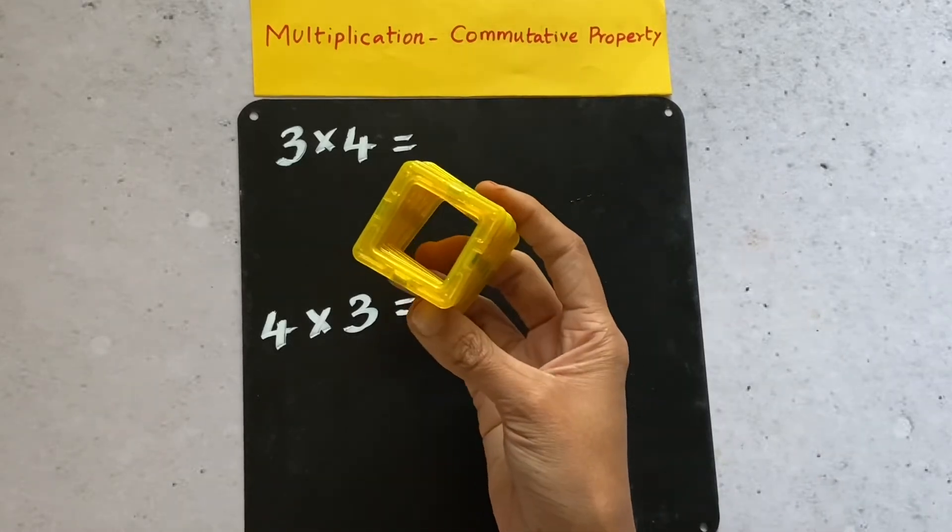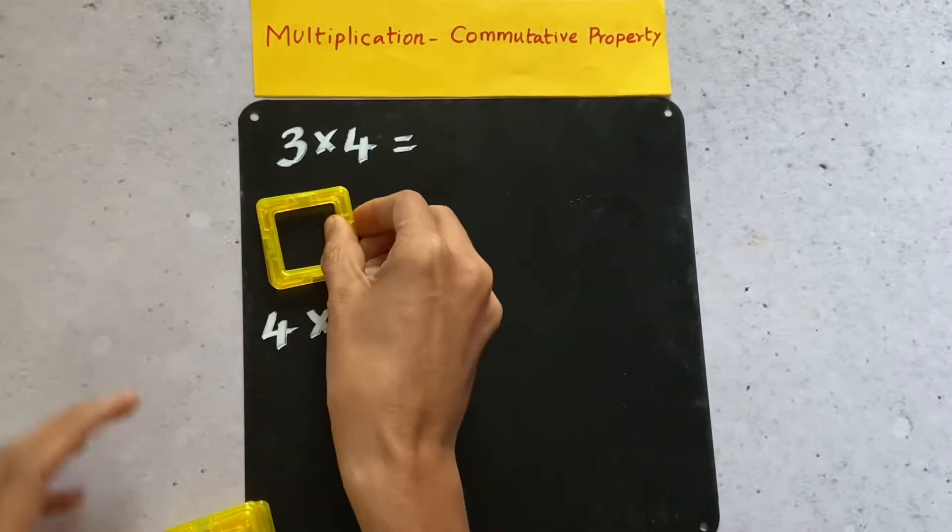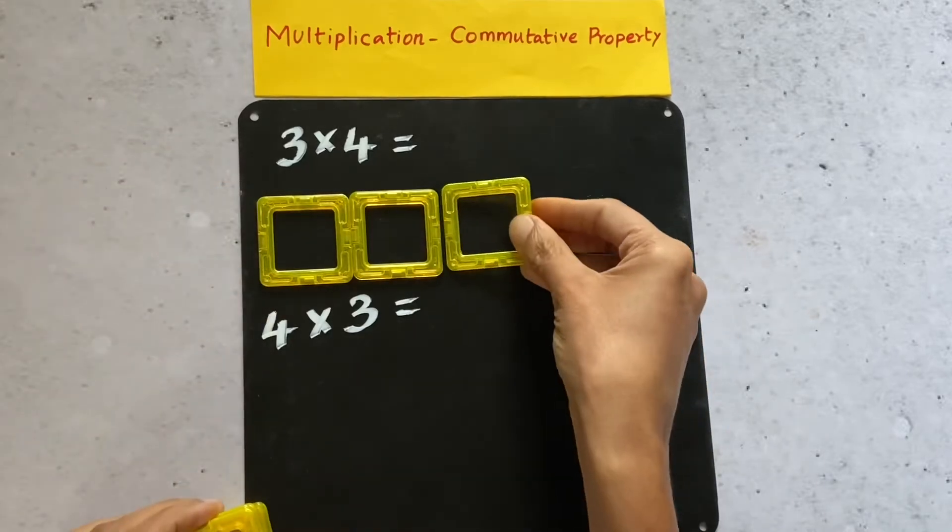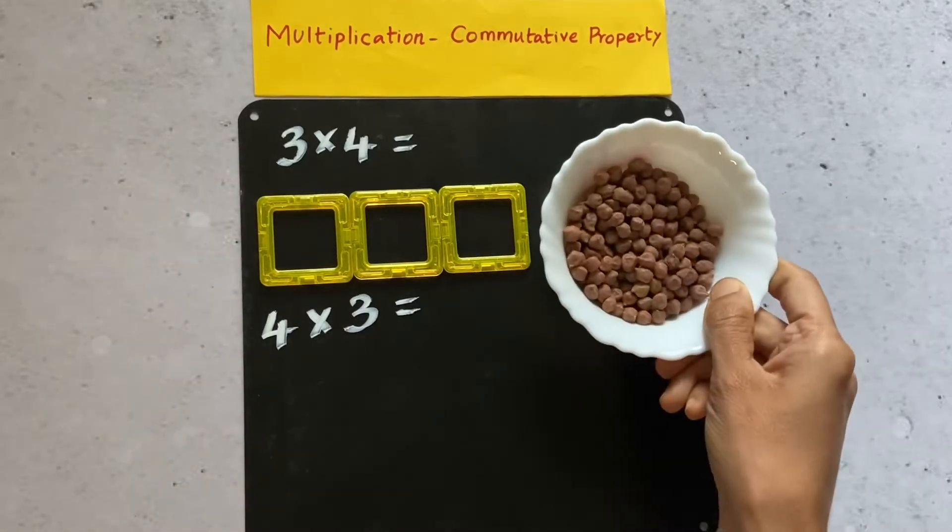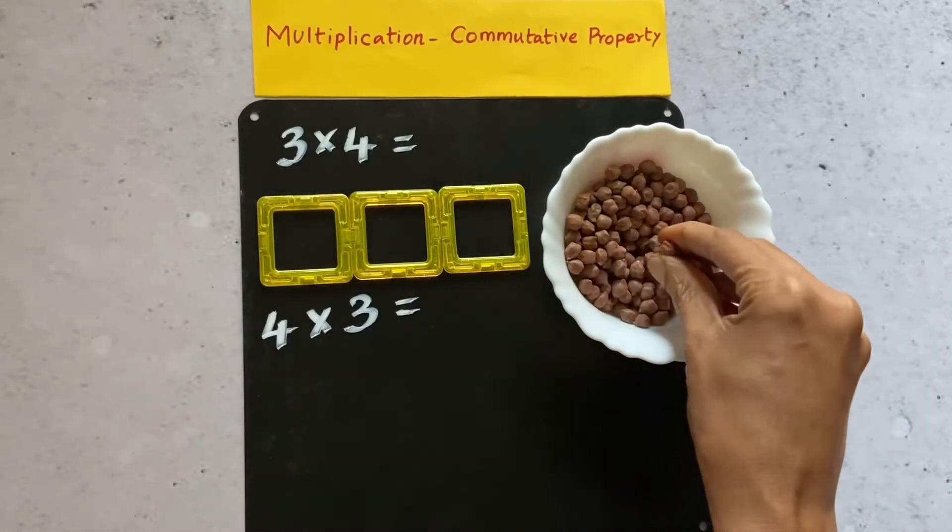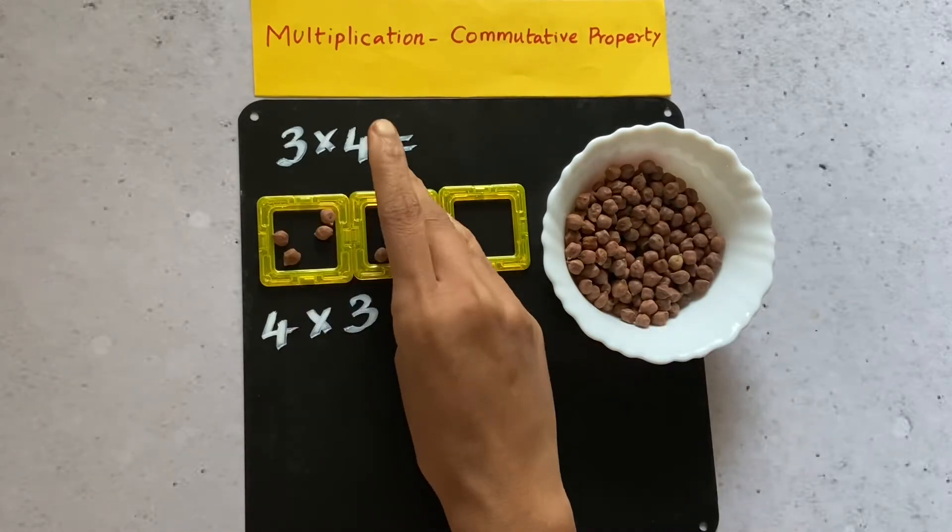I'm using this magnetic tile. So three times four is three groups of four. Place three of this magnetic tile and add four of this black china in each magnetic tile.